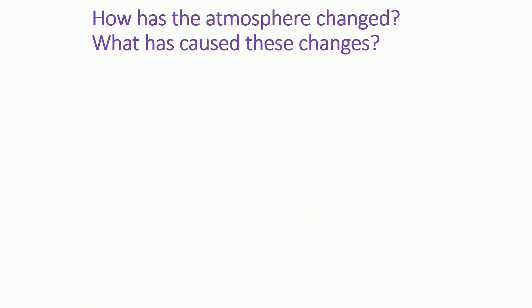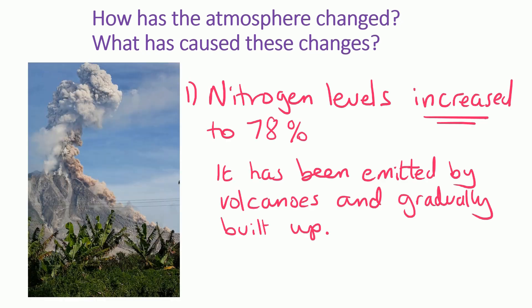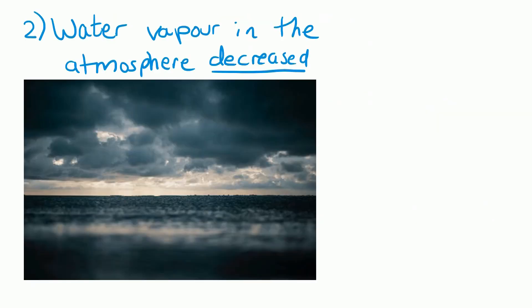You need to know how the atmosphere has changed from the earth's early atmosphere to today's atmosphere, and more importantly what has brought about those changes. The first really obvious change is that nitrogen levels have increased to 78% — that's the most abundant gas in the air today — and that is because it's been emitted by volcanoes and gradually built up in the air.